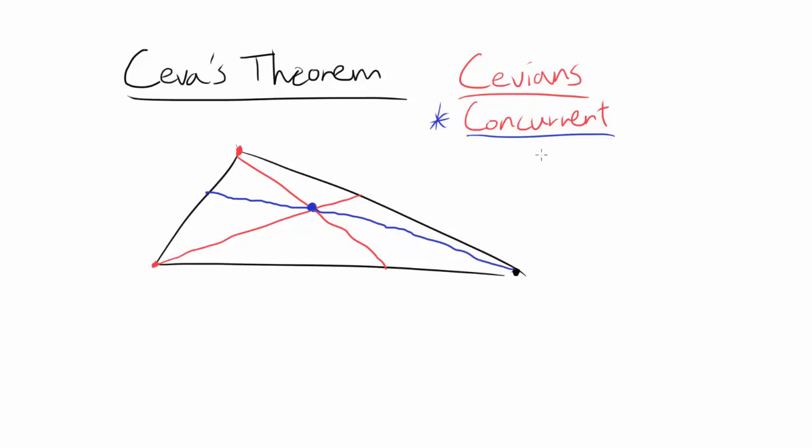And you call this concurrent. Concurrent means three or more lines are intersecting at the common point. So Ceva's theorem tells you the necessary and sufficient condition for this thing to occur.